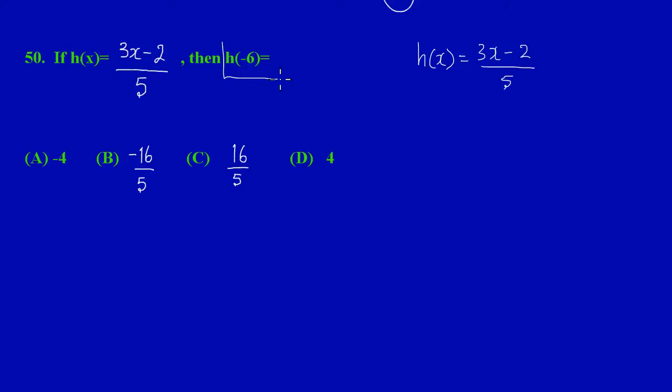Now if you notice they're asking us to find h(-6), so all I'm simply going to be doing in this case is substitute my x for negative 6. So I'm saying h(-6) is really equal to 3 times negative 6, and I'm subtracting 2 from that, and then I'm dividing by 5.